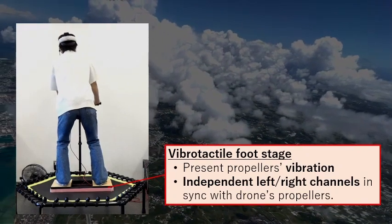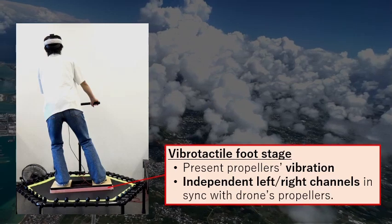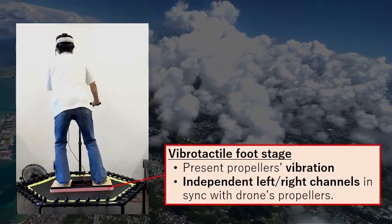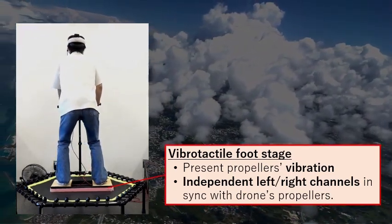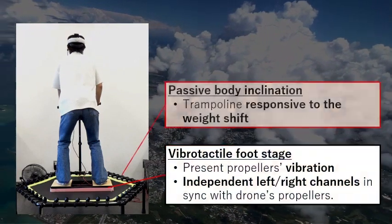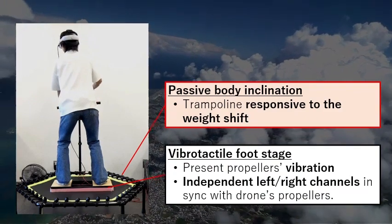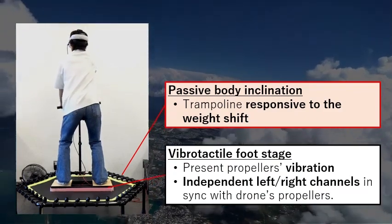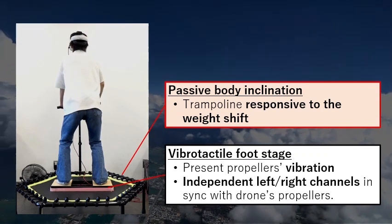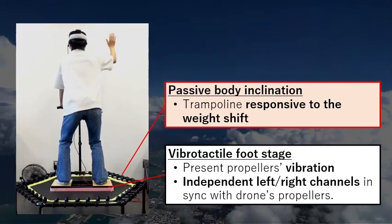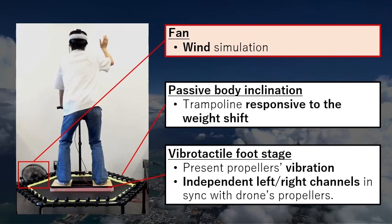According to the drone's motion, the intensities of left and right vibration change. When turning in one direction, the output of the propeller opposite to the turning direction increases. The trampoline is responsible for inclining the vibrotactile footplate in the direction of the weight shift, matching the operator's body inclination with that of the simulated drone. Finally, the fan simulates winds in the virtual space.